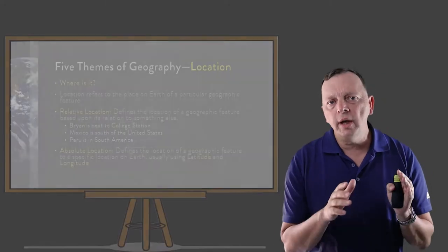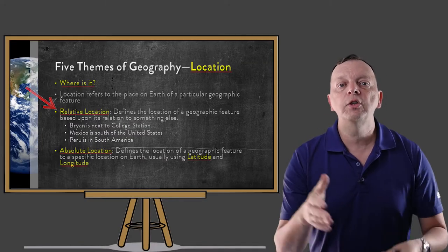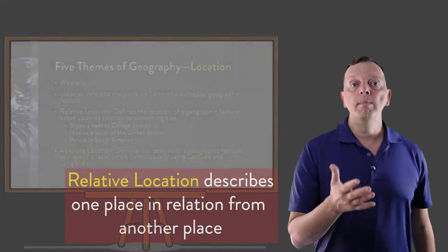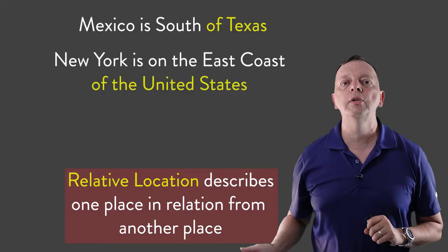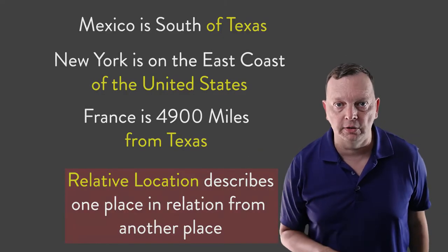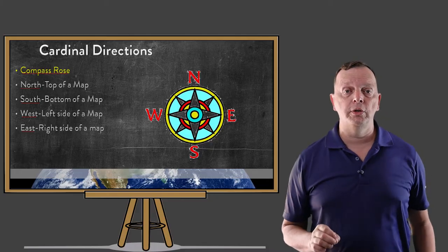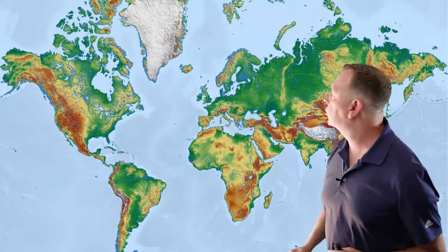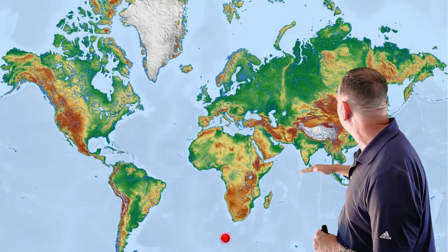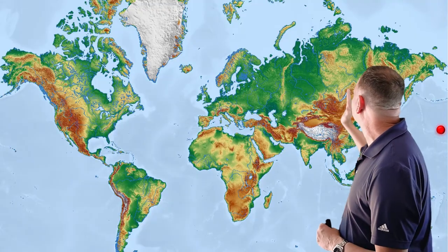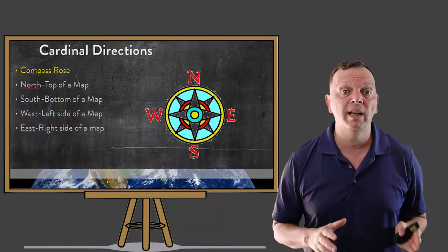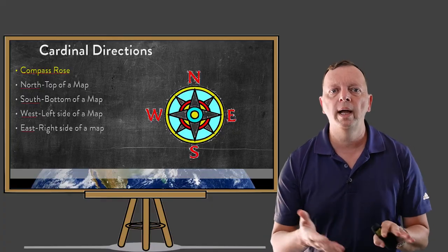The other type of location is a relative location, which doesn't use coordinates, but rather describes a location by where it is in relation to another location. For example, Mexico is south of Texas, New York is on the east coast of the United States, and France is about 4,900 miles from Texas. Relative location is not as exact as an absolute location, but most of the time it is much easier to describe where another place is. In geography, relative location will often use directions such as north, south, east, and west. Usually, north is at the top of the map, south is at the bottom, west is to the left, and east is to the right. Most maps will have what is known as a compass rose, which verifies for you which way the map is oriented.